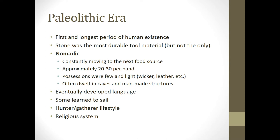Humans during the Paleolithic Era eventually developed language. We have some evidence for them learning to sail from place to place — probably not deep sea sailing, but close to shore. We see evidence of a religious system, which we'll get into in a bit. And we see that the primary means of living was what we would now call a hunter-gatherer lifestyle.